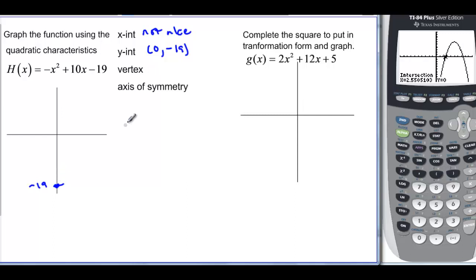And then the vertex. Well, this isn't in the vertex form, so we have to do -b/2a. And if we do -b, that's going to be -10 over 2 times a, which is -1. So the x is going to be equal to -10/-2, or just 5. And then we plug in 5, so -(5)² + 10(5) - 19. And if we plug all that in there, we're going to find out that we have y is equal to 6. So we have (5, 6), so this is my vertex.